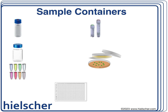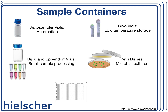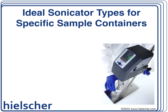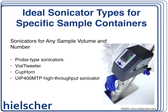Biochemistry employs different containers based on the sample's traits, required volume, and experimental goals. Vials, tubes, beakers, flasks, and plates serve various preparation needs. Examples include auto-sampler vials for automation, cryo-vials for low-temperature storage, Eppendorf tubes and vials for small volumes, and petri dishes for microbial culture. For high-throughput tasks, 96-well plates, micro-titer plates, and multi-well plates accommodate up to 3,456 samples, and are commonly used in PCR, ELISA, and other biochemical tests.